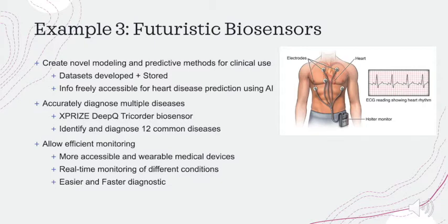Furthermore, the development of X-Prize typical trial wearable sensors enabled with AI can accurately diagnose 12 common diseases, such as anemia, urinary tract infection, and diabetes. They also capture five real-time vital signs: blood pressure, ECG, body temperature, respiratory rate, and oxygen saturation. These AI-enabled power sensors are probably one of the most promising ways to detect diseases in the modern world. Moreover, AI can help create more efficient wearable medical devices for real-time monitoring of heart rate, rhythm, and thoracic fluid.